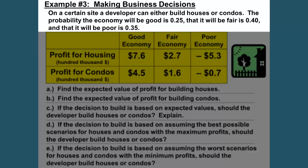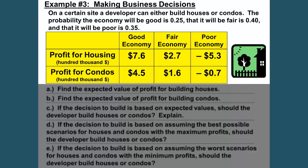On a certain site, a developer can either build houses or condos. The probability that the economy will be good is 0.25, that it will be fair is 0.40, and that it will be poor is 0.35. We have a table that gives profits for housing and profits for condos, and we'll deal with the questions one at a time.